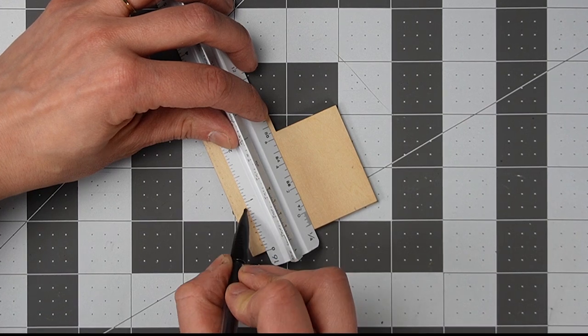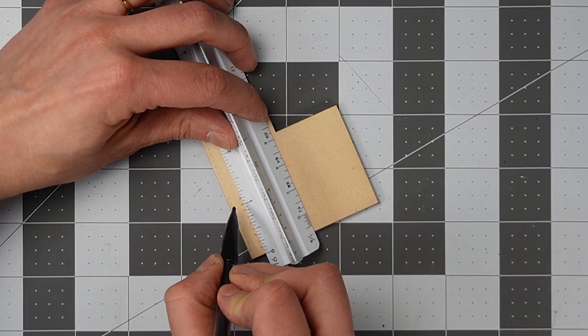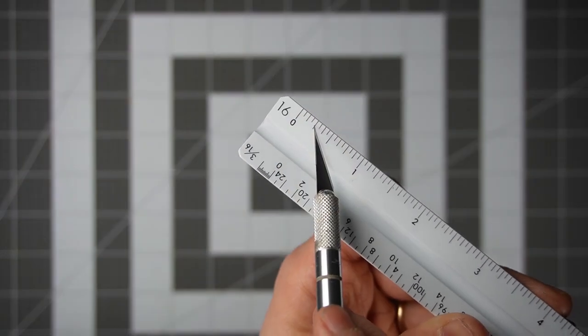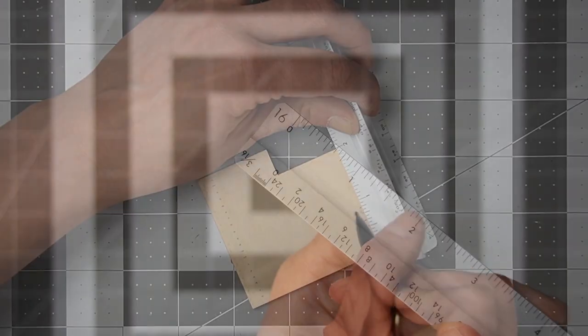The first step is determining how wide I want my boards to be. I'm marking my dots at 1/8 inch which is 6 inches wide in 1:48 scale.